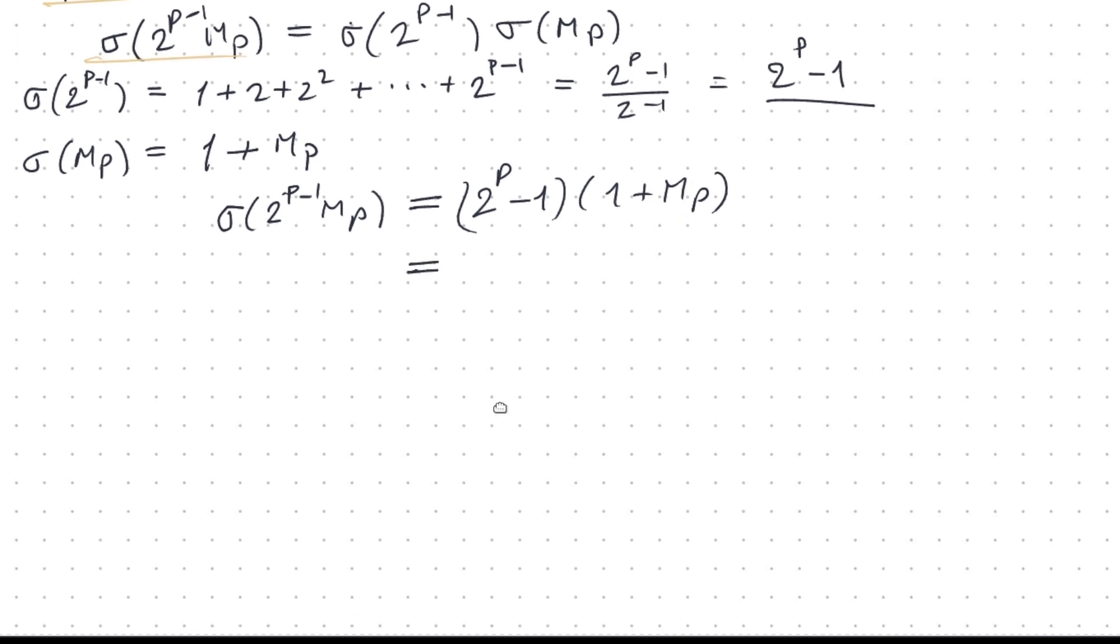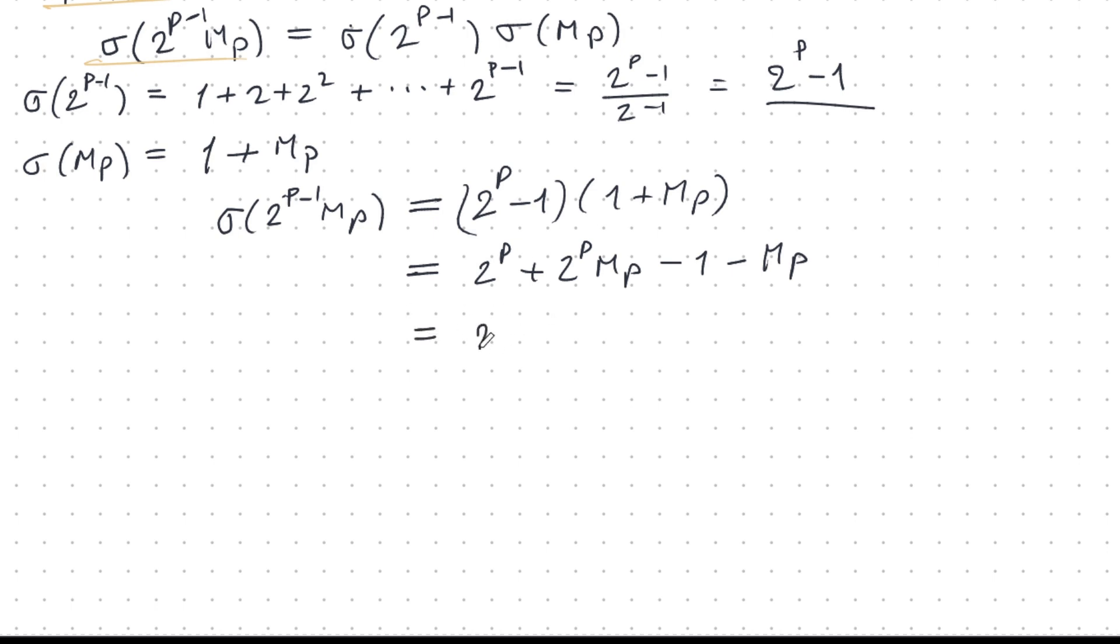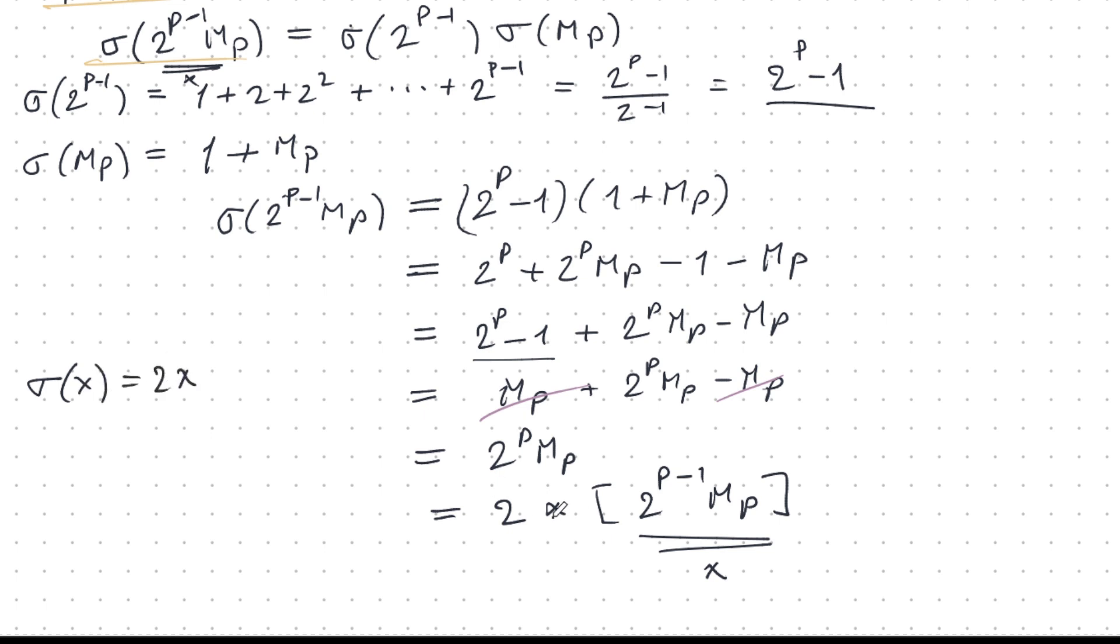Now I do a little bit of algebra, and I get this, and now I can rearrange things a bit. 2 power p minus 1 plus 2 power p Mp minus Mp, but 2 power p minus 1, this thing, that's Mp, plus 2 power p Mp minus Mp, so I'm very lucky that the Mps go away. And watch this, this is really beautiful. 2 power p Mp, and this I can factor out a 2 times 2 power p minus 1 Mp. So if this is my number x, well, that's the same as this x, and so I've proved that sigma x is 2x. So x is perfect.